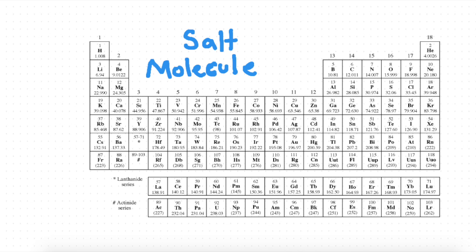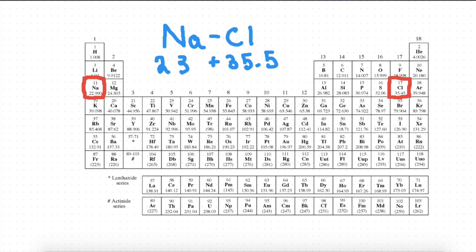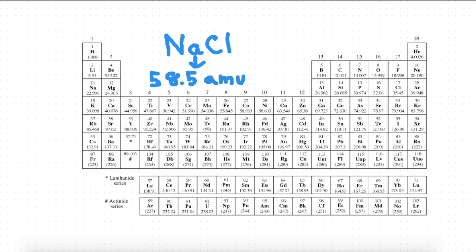Anyway, let's say we have a salt molecule, which is composed of sodium and chlorine. Sodium has an atomic mass of 23 AMU, and chlorine has an atomic mass of 35.5 AMU. If you add those up, you get 58.5 AMU.